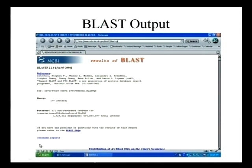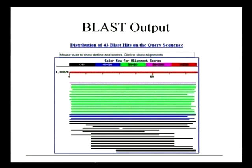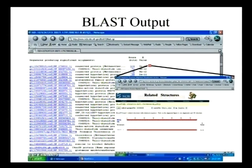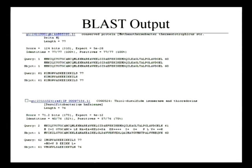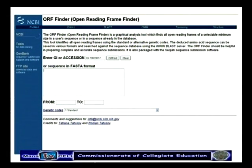The BLAST result will display the date when you ran the BLAST, the reference, your query, and your database — this is the output of BLAST. You can observe the distribution of 43 BLAST hits on the query sequence. You can explore different varieties of alignments or sequences. Coming to ORF Finder — Open Reading Frame Finder — it is also a 6-frame tool. You can type the GI number or select it from the dropdown.